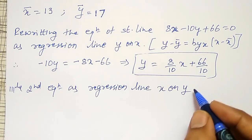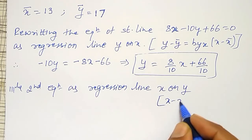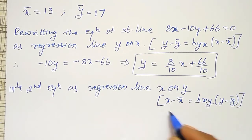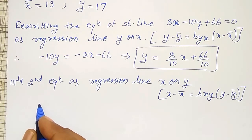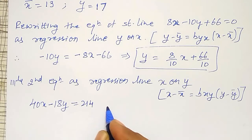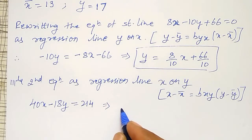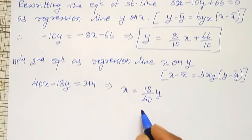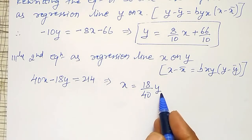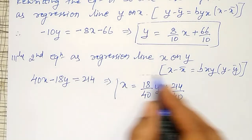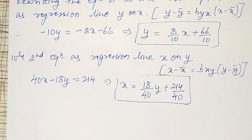Similarly, rewriting the second equation as the regression line X on Y. The standard form is X − X̄ = BXY·(Y − Ȳ), meaning X expressed in terms of Y. The second equation 40X − 18Y = 214 gives X = (18/40)·Y + 214/40. This is the regression line X on Y.